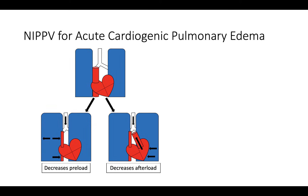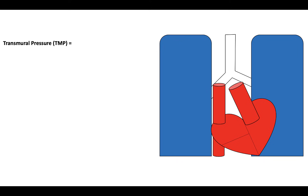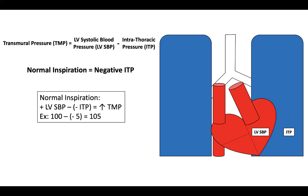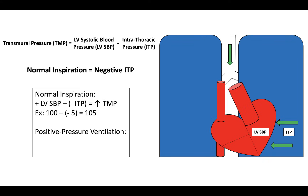How does positive pressure decrease afterload? There are multiple components of cardiac afterload, one of which is the transmural pressure of the left ventricle — the pressure the LV must generate to eject the stroke volume. The transmural pressure is the difference between left ventricular systolic pressure and the pleural or intrathoracic pressure. Normal inspiration produces negative intrathoracic pressure. Therefore, during normal inspiration, the transmural pressure equals systolic blood pressure minus a negative intrathoracic pressure, producing a higher transmural pressure. Basically, the heart must overcome a force trying to pull the LV walls outward. When positive pressure is applied, the transmural pressure and therefore afterload is decreased because you are now subtracting a positive pressure, assisting the LV rather than opposing it.